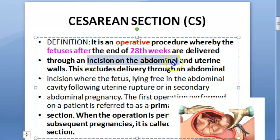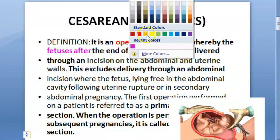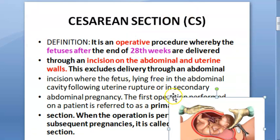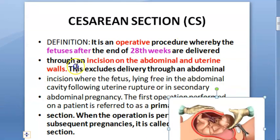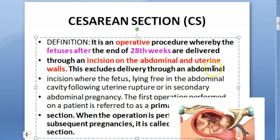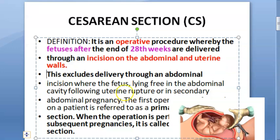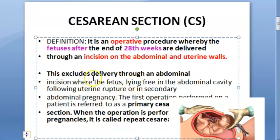Basically, you are making an incision in the abdomen and the uterine wall. You have to cut the abdominal wall first and then you will have to cut the uterine wall — you cannot directly go and cut the uterine wall. This is the definition of caesarean section.